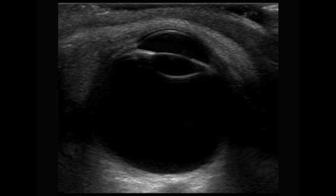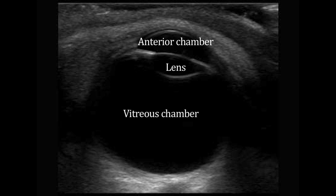Let's take a look at a normal eye. On ultrasound, we can see three fluid-filled structures in the eye: the lens, the anterior chamber filled with aqueous humor, and the vitreous chamber filled with vitreous humor. The retina is the layer of cells at the back of the eye that allows us to see, and the optic sheath just behind it contains the optic nerve and CSF.